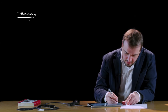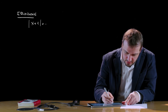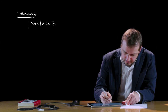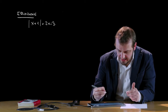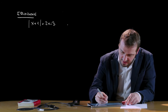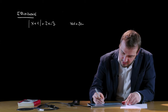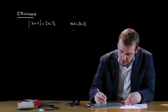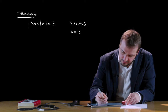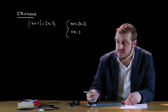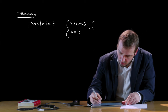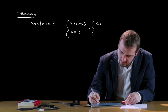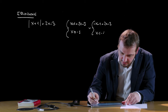Facciamo un esempio: |x+1| = 2x-3. Questa equazione equivale a: x+1 = 2x-3 nel caso in cui x+1 risulti essere positivo, ossia se x è maggiore o uguale di meno 1, e questo ovviamente a sistema, contemporaneamente verificate. Oppure sarà pari a -x-1 = 2x-3 nel caso in cui evidentemente x sia minore di meno 1.